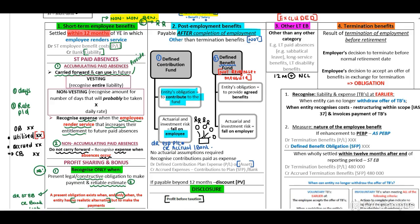A defined benefit plan is where an entity instructs another entity in financial services to develop a plan specifically for that entity. The employees of this entity contribute to this specific plan. The entity's obligation is to provide agreed benefits, and the actuarial and investment risk falls on the employer. If payable beyond 12 months, you need to identify it as long-term and discount accordingly.